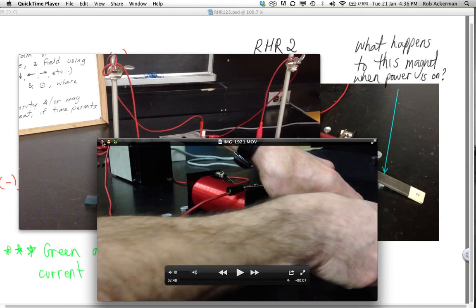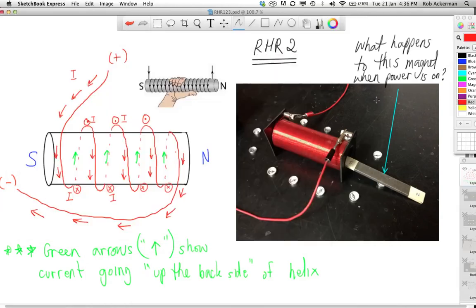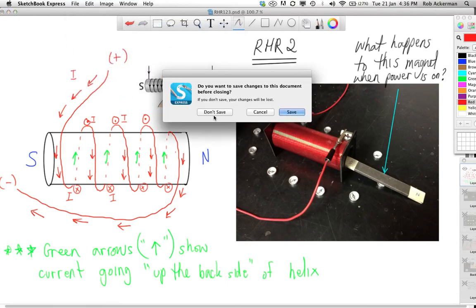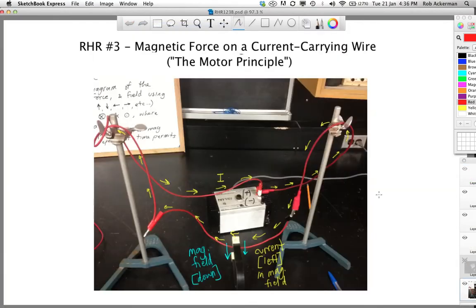And what I'm going to do now is just finish off with right-hand rule number 3. So here we go. This was the last demonstration that we saw, where I had a power supply, which had the current going this way, coming around, going to the left, or east in the classroom, and then back to the power supply like that. I had a horseshoe magnet with north on top, south on the bottom, so the magnetic field was down.